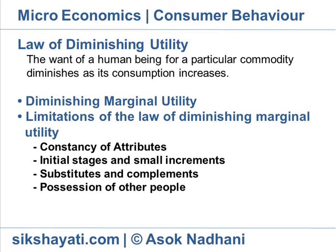Possession of other people: The utility of a commodity sometimes depends on the amount of the commodity which other people possess. For example, in a rich locality, if every householder except one has two cars, the intensity of his desire for a second car may be higher than that for the first car.